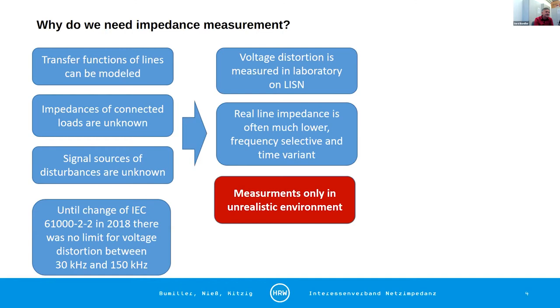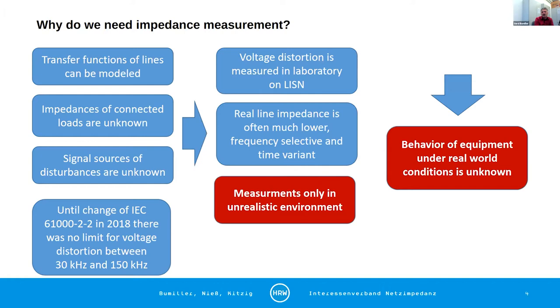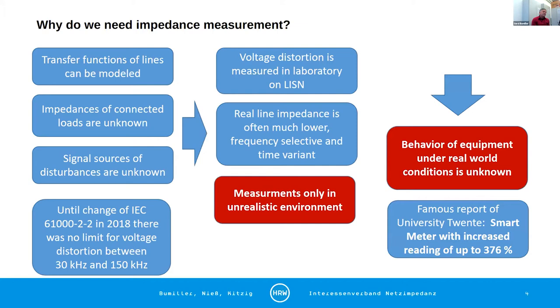What results is that these measurements are only done in unrealistic environment. So if we do measurement on voltage distortions, we do it in an unrealistic environment. We have no idea of the behavior of equipment under real world conditions. I think we had a famous report from the University of Twente where smart meters typically designed for accuracy better than 1% increased reading up to 366%, completely stupid value due to effects. We need better understanding of the behavior of the grid over full frequency range and also for higher frequencies.